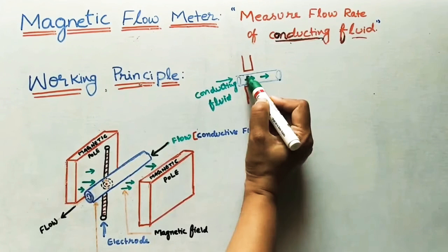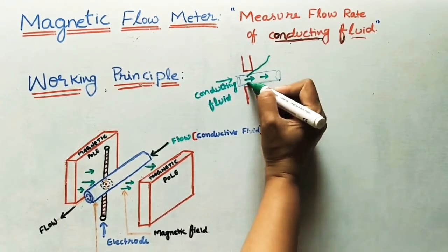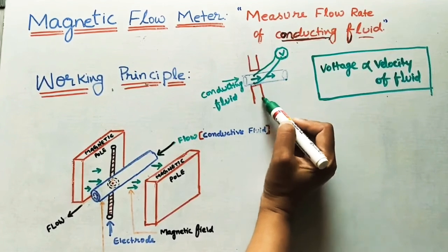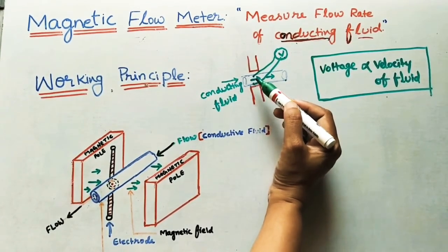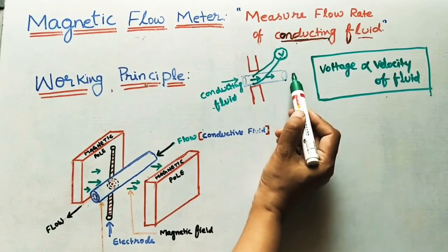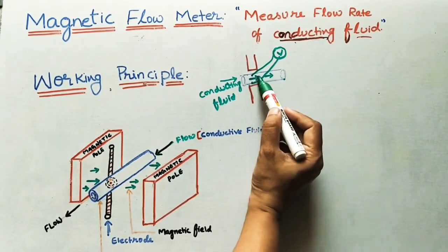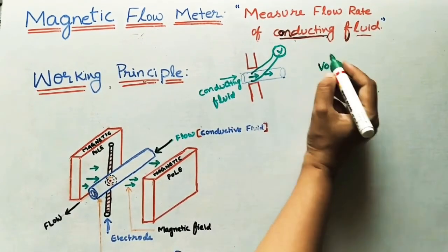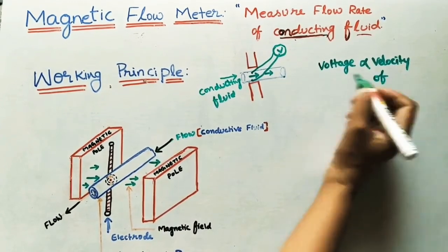Whenever this conducting fluid cuts the magnetic field, voltage will generate. To find this voltage, we connect two wires or terminals to the non-conducting pipe and connect a voltmeter. The flow is perpendicular — transverse — to the magnetic field. This is important: the flow is perpendicular to the magnetic field. Whenever this conducting fluid cuts the magnetic field, it induces a voltage that is proportional to the velocity of the flowing conducting fluid.